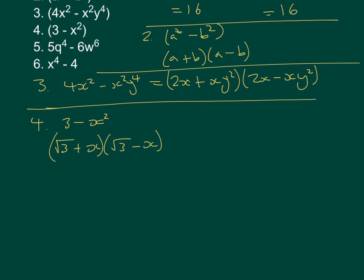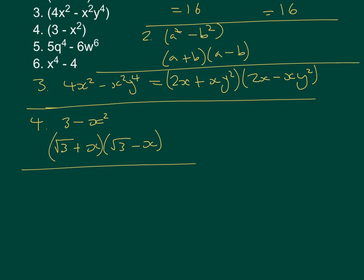Let's move on to number 5. It's going to be similar here. So we've got 5q⁴ - 6w⁶. So the square root of 5q⁴ is going to be √5q².